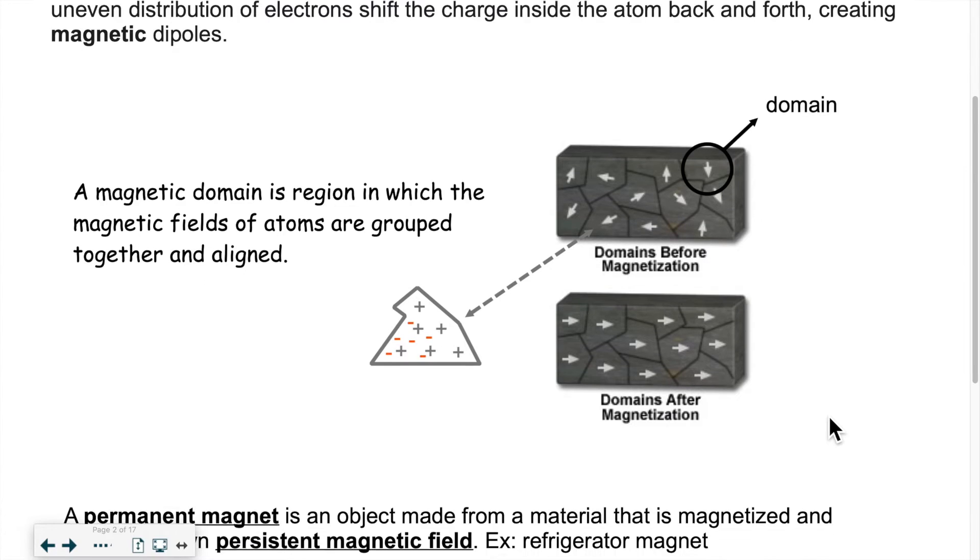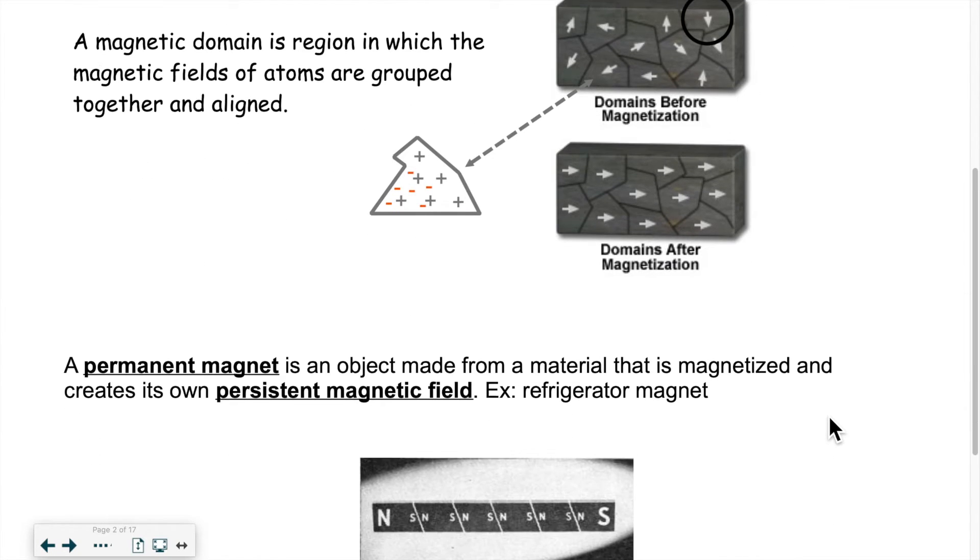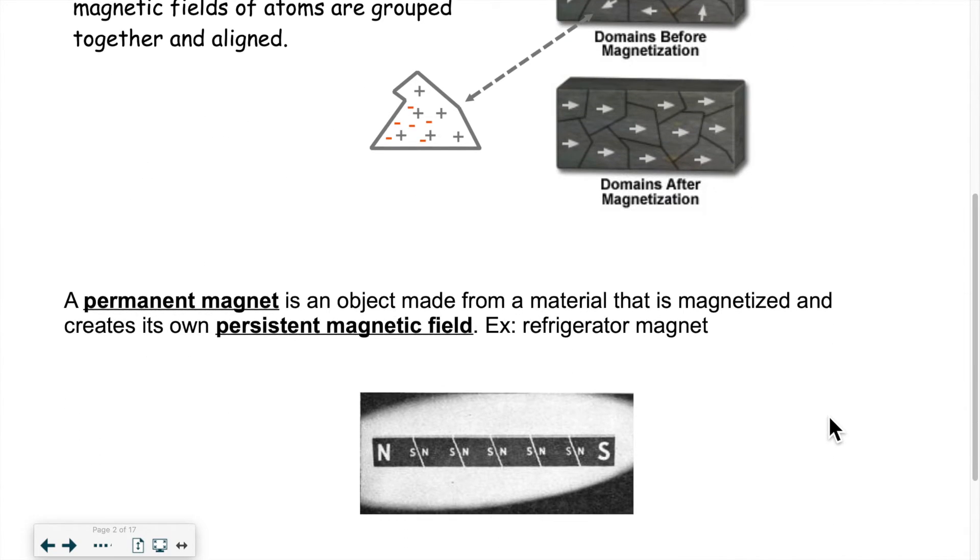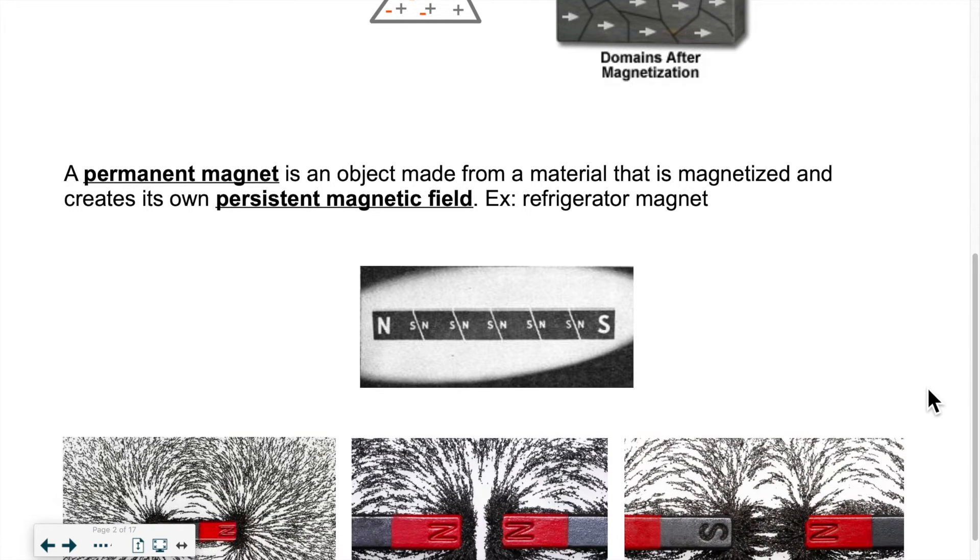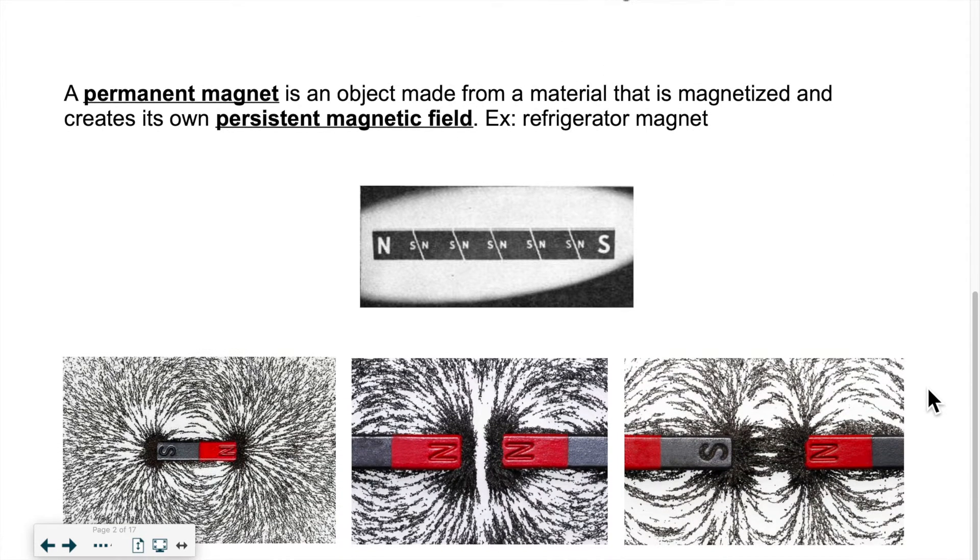Now if you have a permanent magnet, it says it - it's permanent. So there's always a side that we will call the north pole and a side we will call the south pole. An example of that would be a magnet that you put on the fridge. Those are always magnetized.